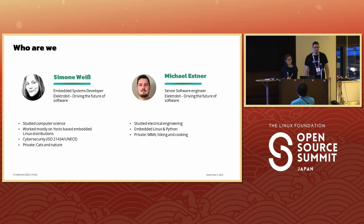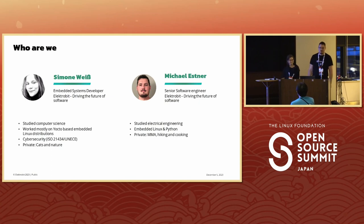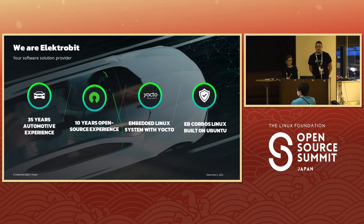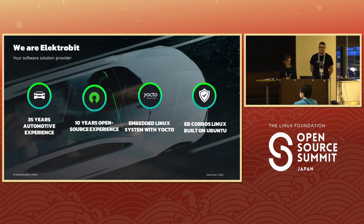My name is Michael Estner. I'm a senior software engineer at Electrobit. My background is electrical engineering and my day-to-day work is about embedded Linux and Python. In my spare time I practice MMA, I love hiking and cooking, and it's also my first time speaking. Electrobit is an automotive company with 35 years of experience in this field, and nowadays we have 10 years of open source experience.